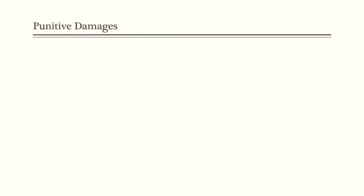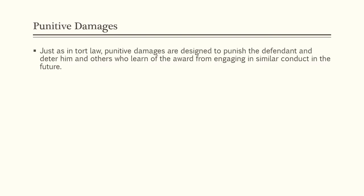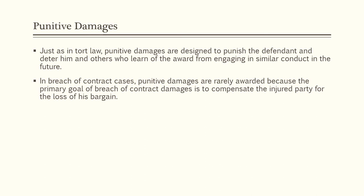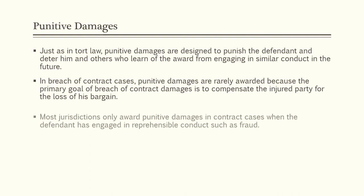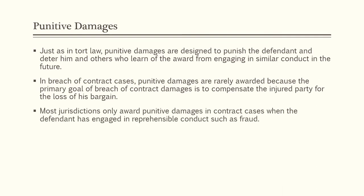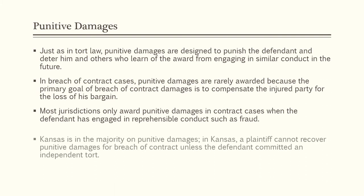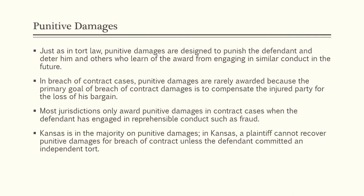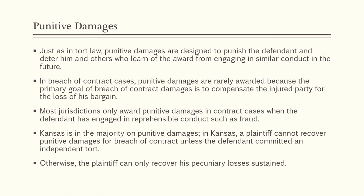Another legal remedy is punitive damages. Just as in tort law, punitive damages are designed to punish the defendant and deter similar conduct in the future. In breach of contract cases, punitive damages are rarely awarded because the primary goal is to compensate the injured party for loss of the bargain. Most jurisdictions only award punitive damages in contract cases when the defendant has engaged in reprehensible conduct such as fraud. In Kansas, a plaintiff cannot recover punitive damages for breach of contract unless the defendant committed an independent tort, meaning the plaintiff must prove all elements of that individual tort such as fraud; otherwise only pecuniary losses are recoverable.